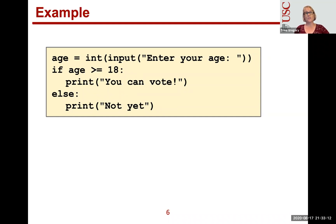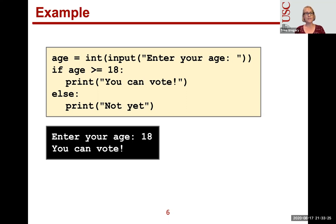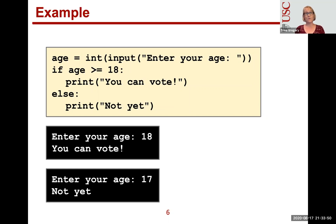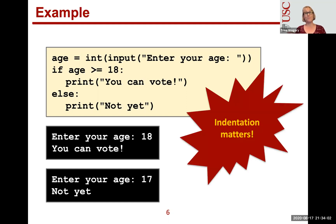That indentation matters — in whatever IDE you're using, like PyCharm or Replit, you use consistent spacing or a tab. If we enter 18, the age variable holds 18, and 18 >= 18 is true, so it prints 'You can vote' and then jumps past the else. If we enter 17, that condition is false, so it skips to the else and prints 'Not yet'. Big thing to remember in Python: indentation determines what code gets executed.